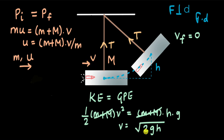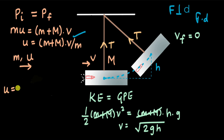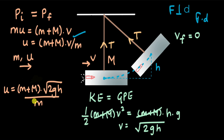We get the velocity V with which the block and bullet started as the square root of 2gh. We know the length of the string, and using some trigonometry or a camera snapshot when the system comes to rest, we can measure height h. Substituting this V back into our momentum equation, u equals (small m + capital M) times the square root of 2gh, divided by small m.